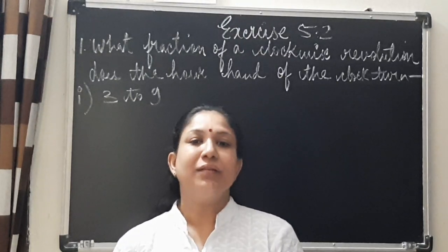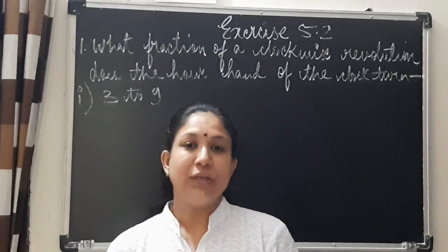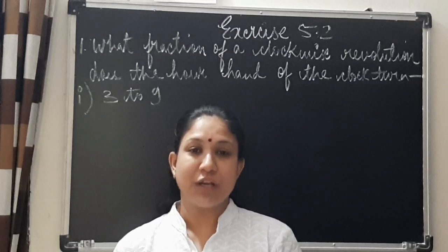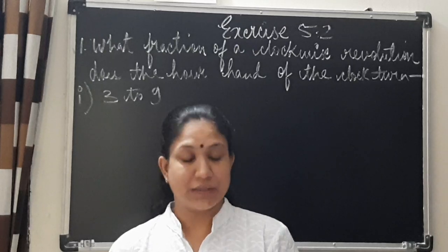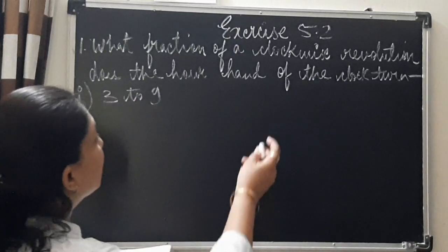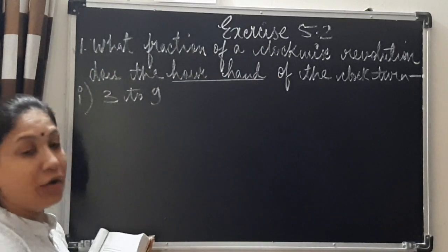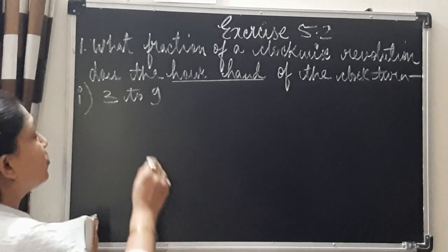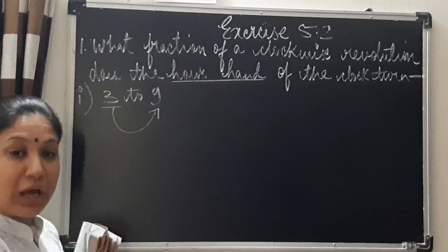Let us discuss the first question of exercise 5.2. This is from chapter Understanding Elementary Shapes from NCRT Mathematics for class 6. The first question is: what fraction of the clockwise revolution does the hour hand of the clock turn, if it points to 3 and then it moves to 9?